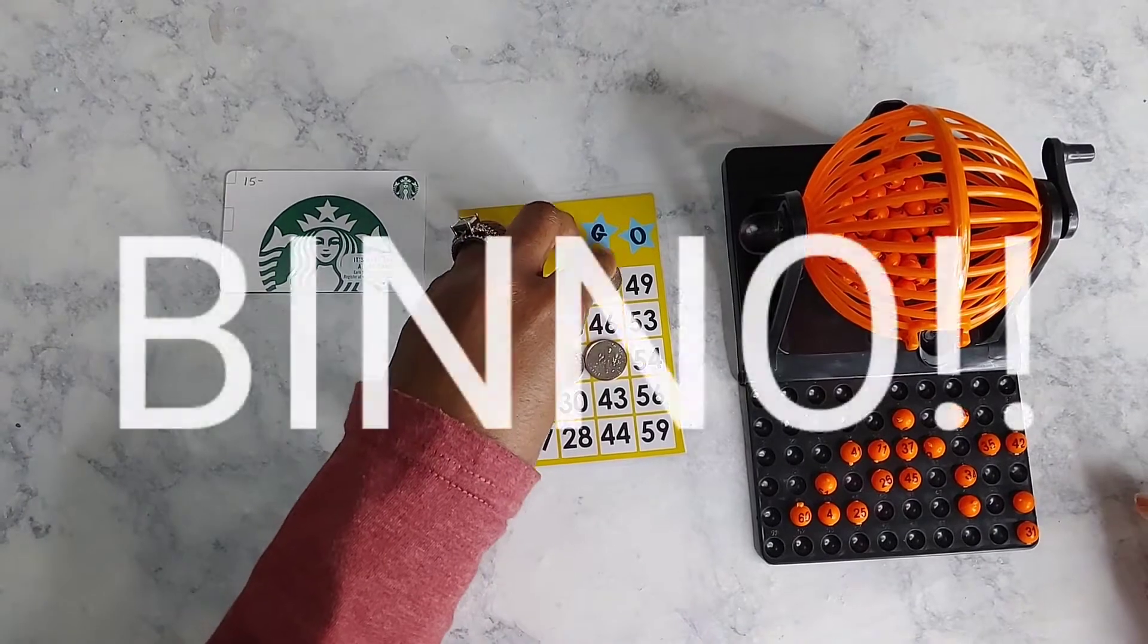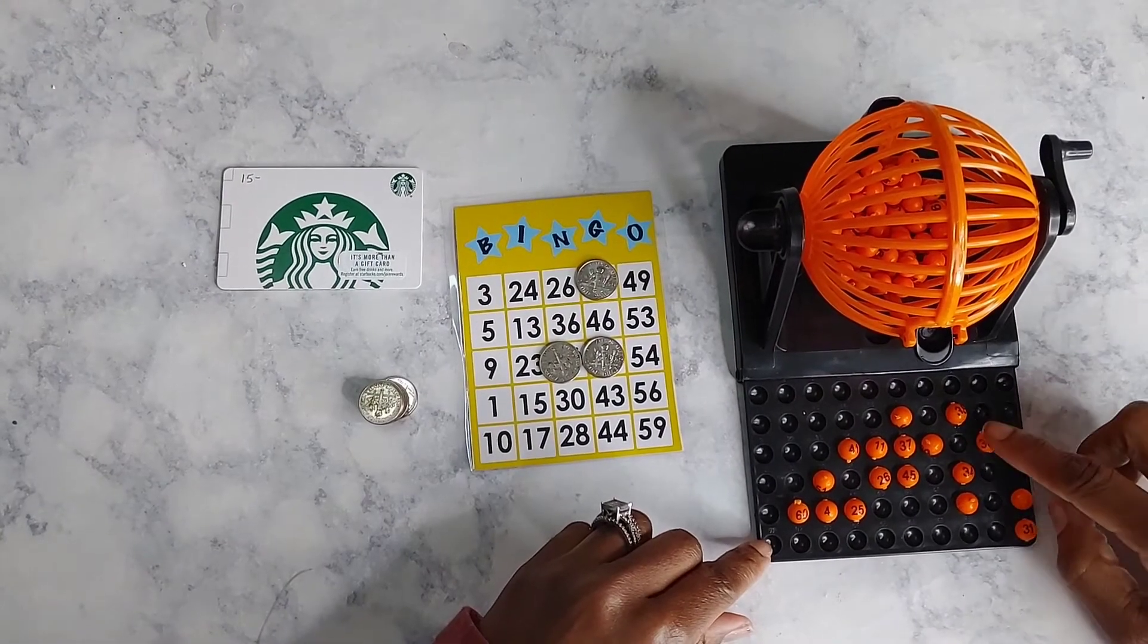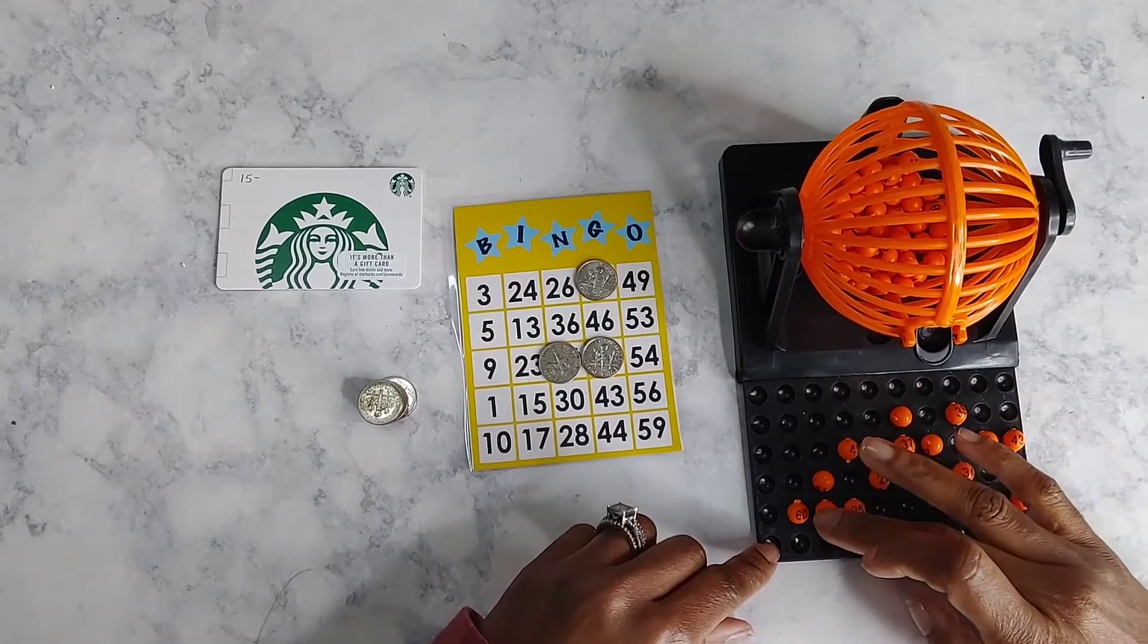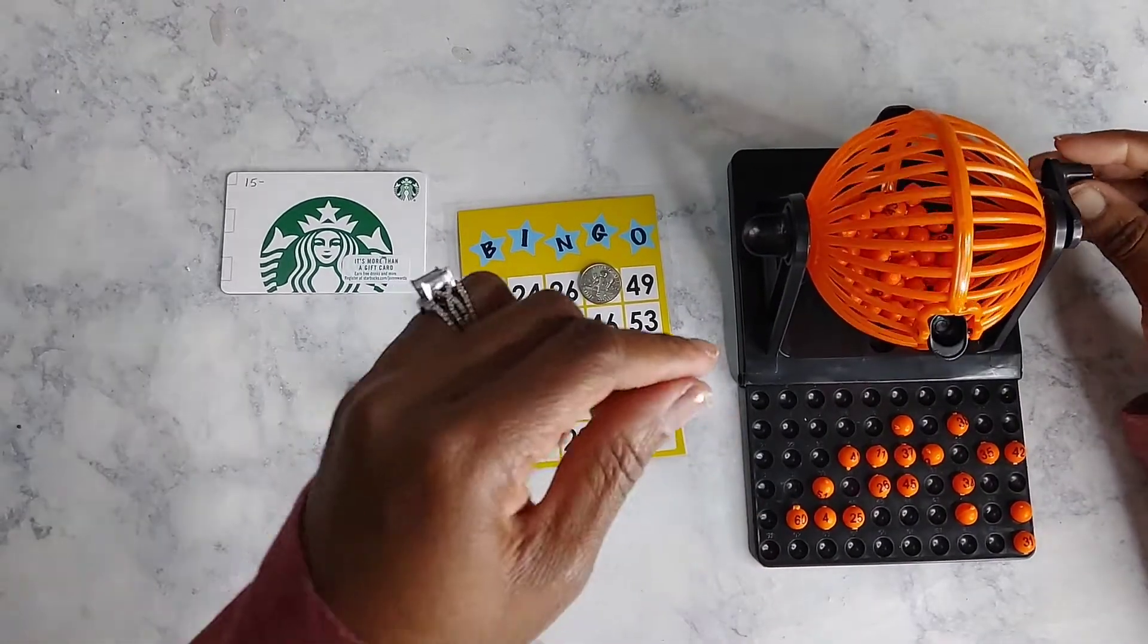Bingo. Thirty-seven. So how many is that? One, two, three, four, five, six, seven, eight, nine, ten, eleven, twelve, thirteen, fourteen, fifteen, sixteen, seventeen, eighteen. Got seven more numbers to pull.